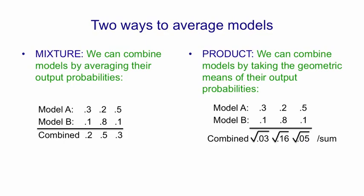You'll notice that in a product, a small probability output by one model has veto power over the other models.